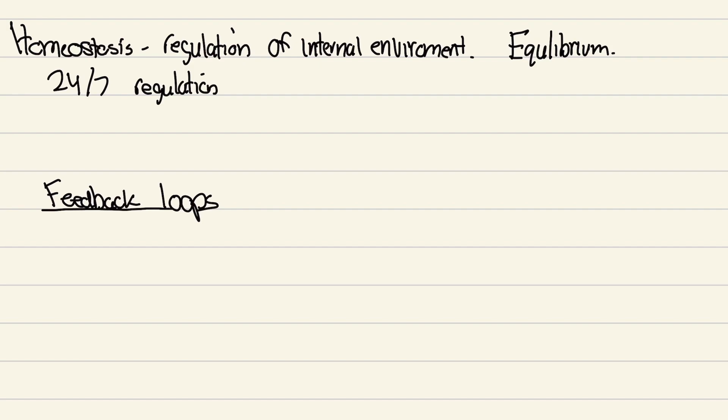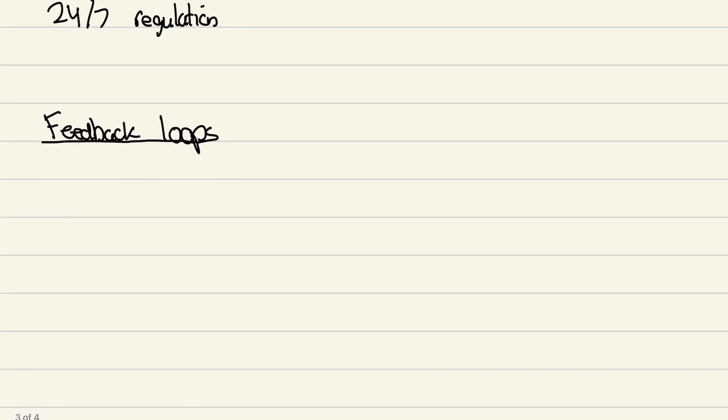There are two types of feedback loops we're going to go over slowly because it's kind of complicated. We have positive feedback loops and negative feedback loops.